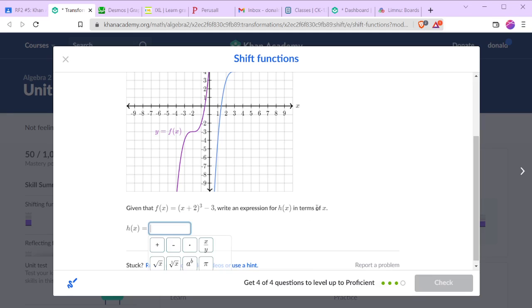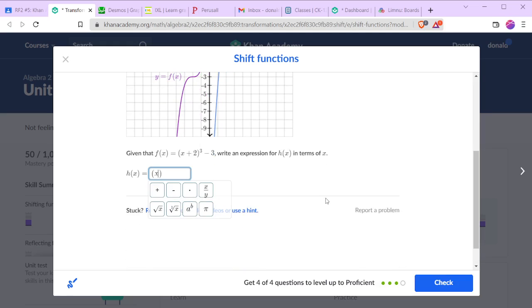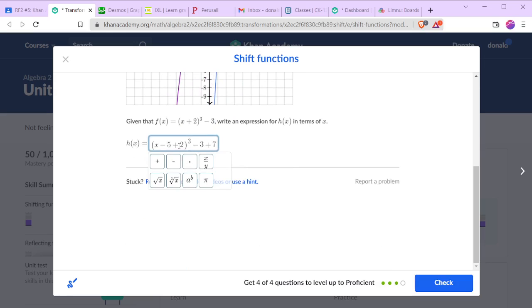Now we are not being asked for it in terms of f, we're being asked for it in terms of x. So our five units right is replacing x with x minus five. And we moved, I believe we said seven units up. Now we need to simplify. So this x minus five plus two becomes x minus three, and the minus three plus seven becomes a plus four.